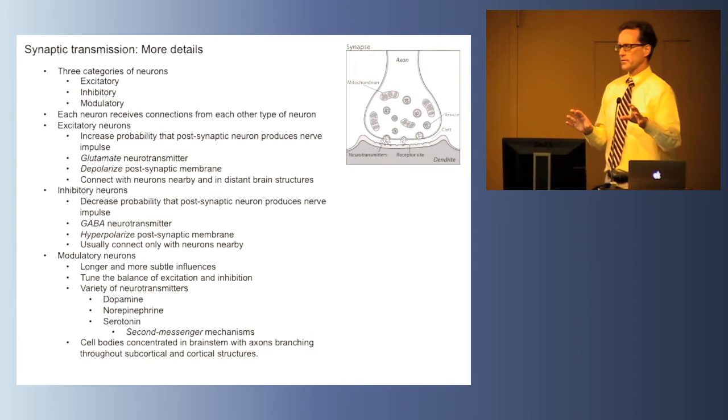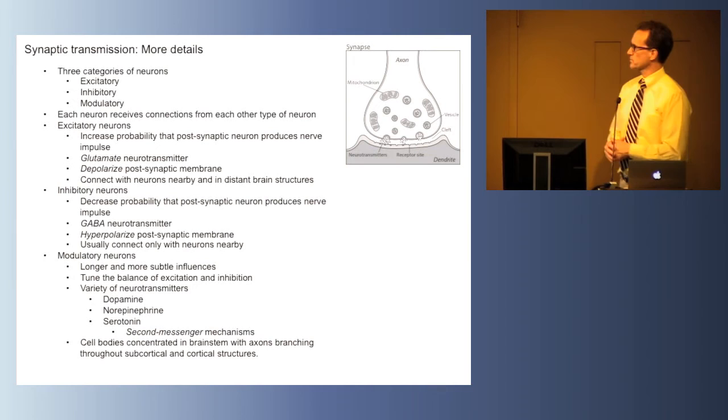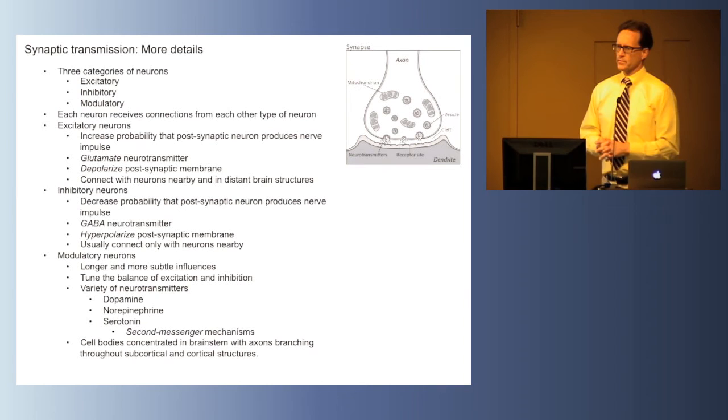There's a collection of other types of neurons and neurotransmitters that modulate this excitatory-inhibitory process. Excitatory neurons and inhibitory neurons have a more immediate and transient influence. The modulatory neurons have a longer influence on the postsynaptic neuron. They tune the balance of excitation and inhibition. This is an effective way to think about them in general.